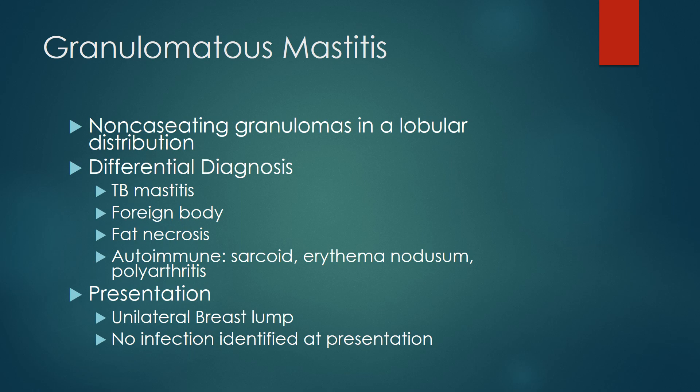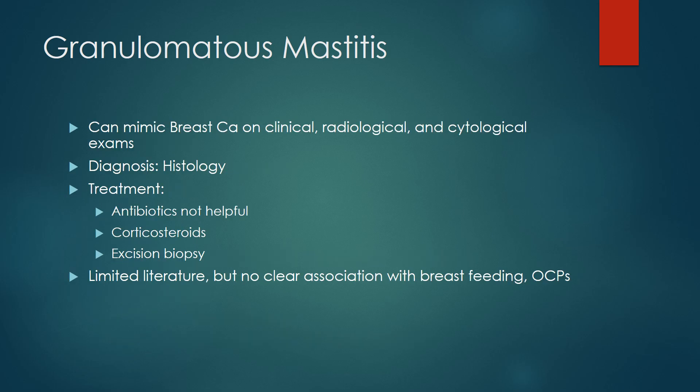Granulomatous mastitis is a non-caseating granuloma in a lobular distribution. Differential diagnoses include TB mastitis, foreign body fat necrosis, autoimmune causes such as sarcoid, erythema nodosum, and polyarthritis. It can present as a unilateral lump and can mimic breast carcinoma. Diagnosis requires clinical, radiological, cytological, and histological examination. Treatment is antibiotics, corticosteroids, and excisional biopsy.